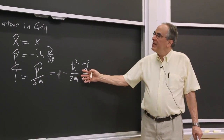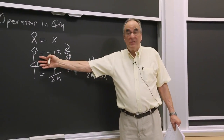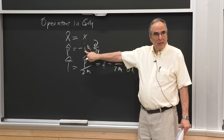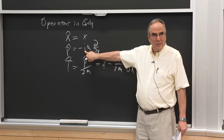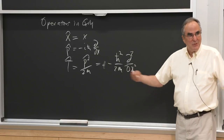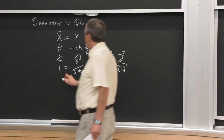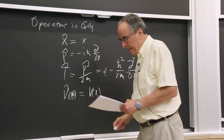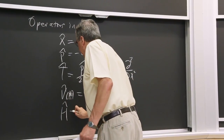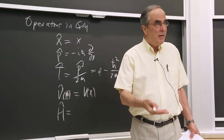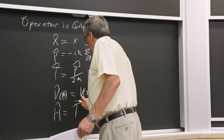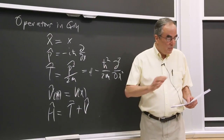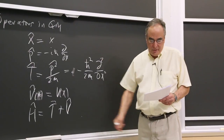The kinetic energy operator is p² over 2m, which works out to be minus ℏ² over 2m times the second partial derivative with respect to x. The potential is just the potential. The most important operator when we start out is the Hamiltonian — the operator corresponding to energy — which is kinetic energy plus potential energy.